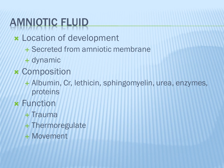Amniotic fluid is secreted primarily from the amniotic membrane for the first 9 to 10 weeks, and then the kidneys begin to add to it as well. It is dynamic, meaning it's constantly being replenished and absorbed. For the first 9 weeks, it's just water, but after that, once the kidneys start helping, it also includes albumin, creatinine, lecithin, sphingomyelin, urea, enzymes, and proteins.